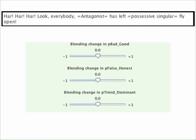First we go to the lower right corner of the window to find this section. This is where we specify the emotional reaction of the antagonist to the player's choice of this option.